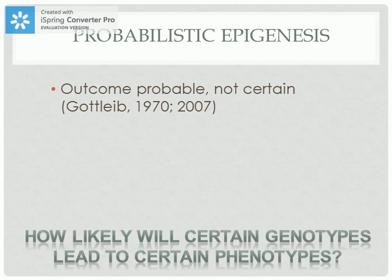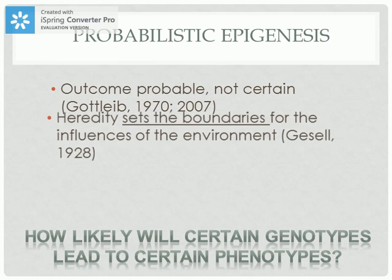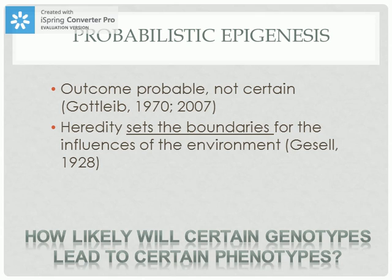Gottlieb was the first theorist in psychological sciences to propose this idea, which means that phenotypic outcomes are probable or likely based on genotype, but in no way certain. This idea wasn't completely new — as early as 1928, psychological theorist Arnold Gesell put it simply: heredity sets the boundaries for the influence of the environment. This is what is meant by the term reaction range.